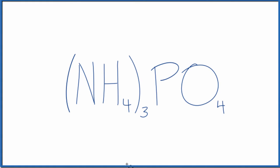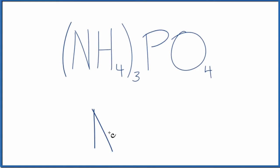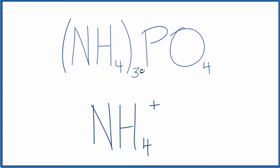So we have three ammonium ions. The ammonium ion is NH4 plus. And since we have three of them, we'll put the three out here as a coefficient. So we have three ions, three ammonium ions.